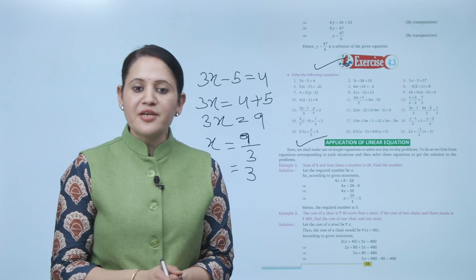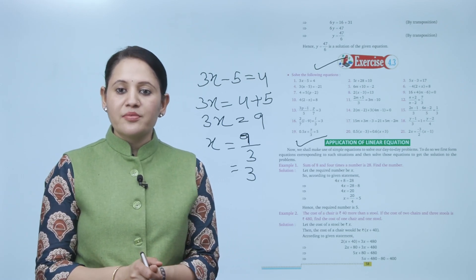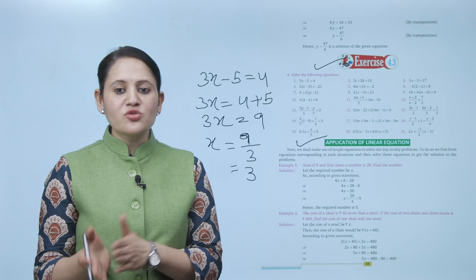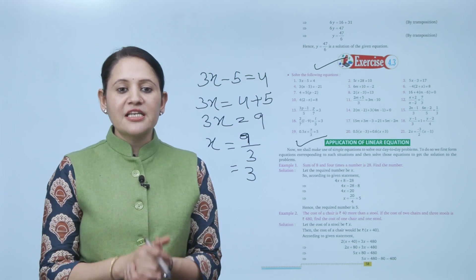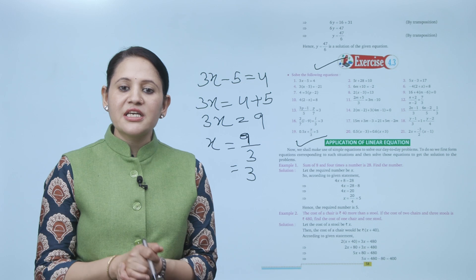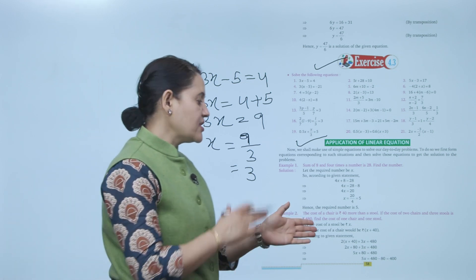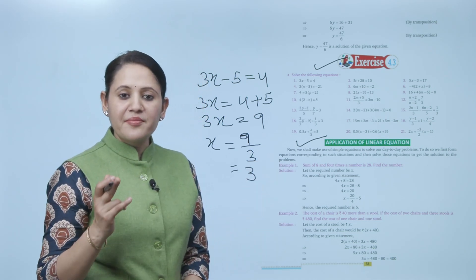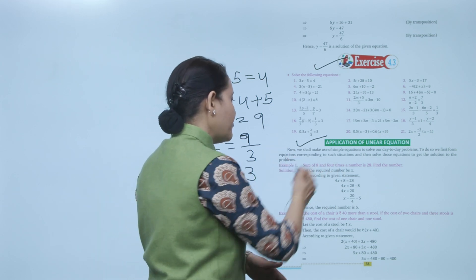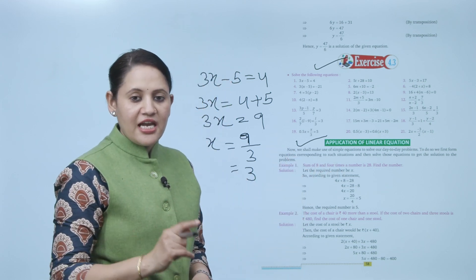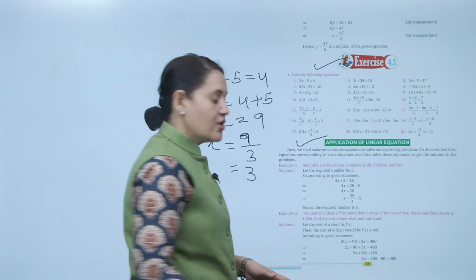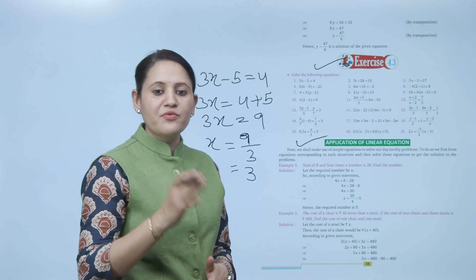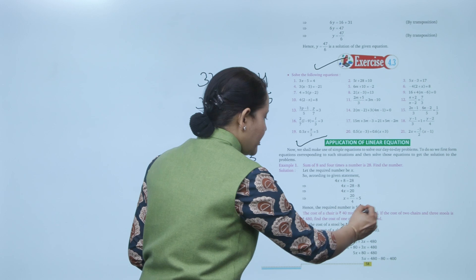Next is the application of linear equations. We shall make use of simple equations to solve day-to-day problems. We first form the equation corresponding to the situation, then solve it. Example: the sum of 8 and 4 times a number is 28, find the number. Let the number be x. Then 4x plus 8 equals 28, so 4x equals 20, and x equals 5. The required number is 5.